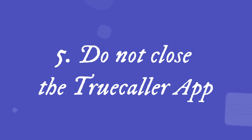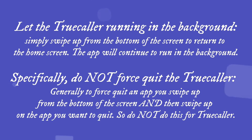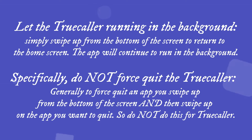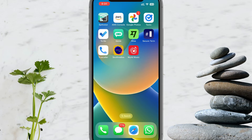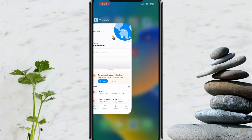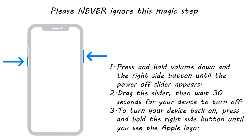Solution 5: Do not close the Truecaller app. According to Truecaller, the app must be running in the background all the time on your iPhone so that it can detect incoming caller details. If you close the app, it may not work properly. So please open the Truecaller app and just go to the home screen so that Truecaller keeps running in the background. After all these steps, it's a good idea to restart your iPhone once and check if it started working.